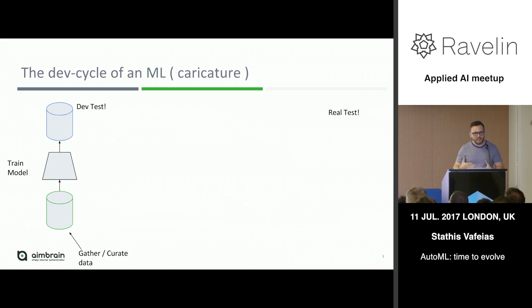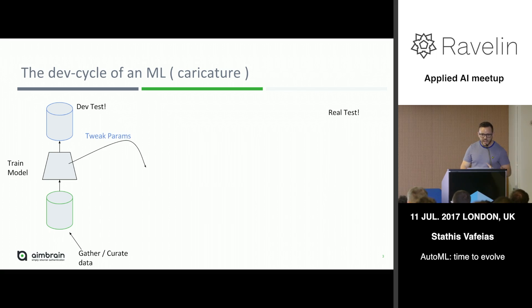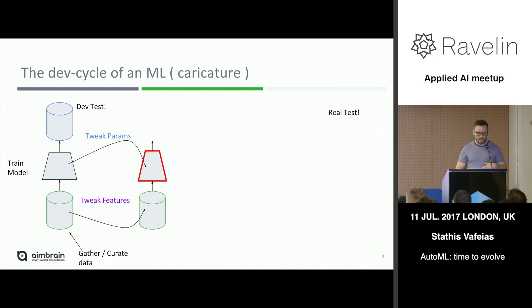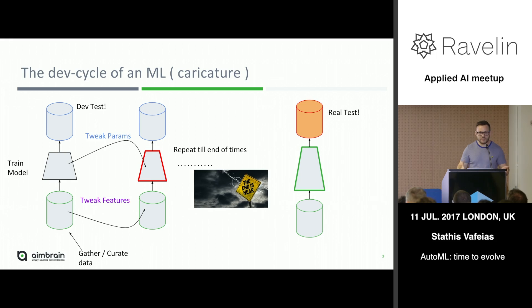We are relevant to machine learning and we all know the development cycle of machine learning. We start with a database that we want to classify or do a regression or solve some type of problem. We gather and curate the data, create a first model, test it, see how it performs, and then iterate the process by tweaking the parameters of the model, tweaking the features, redoing the model, until someone tells us we have to stop because we have to put it in production.